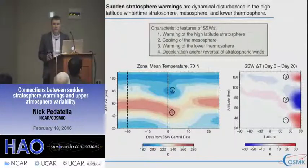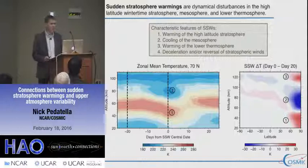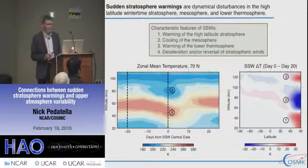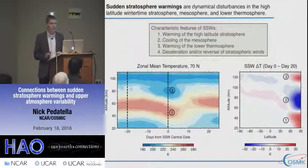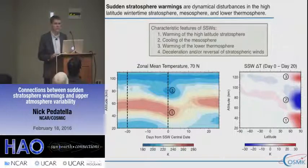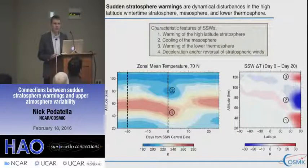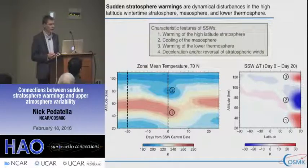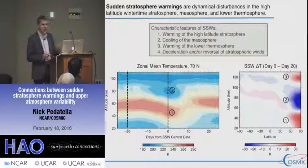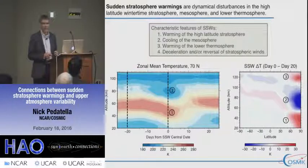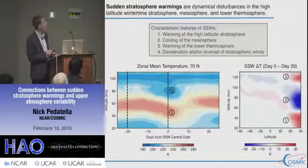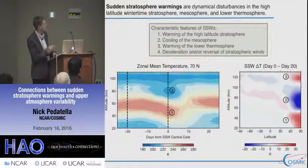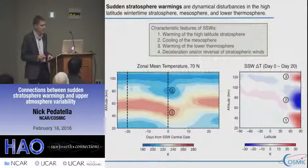As brief background, sudden stratosphere warmings are dynamical disturbances in the high-latitude wintertime stratosphere, mesosphere, and lower thermosphere — where you see the most dynamical changes in the lower atmosphere. They are characterized by several key features. On the left is the zonal mean temperature at 70 degrees north, shown as altitude versus day relative to the center date of a stratosphere warming. The right-hand panel shows the anomaly from the warming relative to prior conditions.